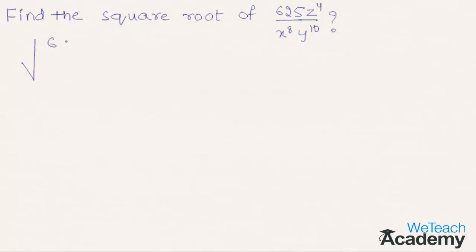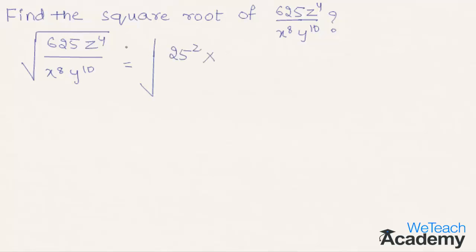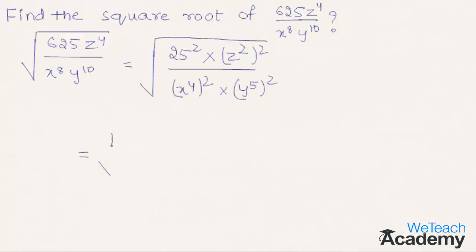We know that 625 is a perfect square and its square root is 25, so 625 can be written as 25 squared. z power 4 can be written as z squared whole square, x power 8 can be written as x power 4 whole square, and y power 10 can be written as y power 5 whole square. This gives us the square root of 25 into z squared whole square, divided by x power 4 into y power 5 whole square.